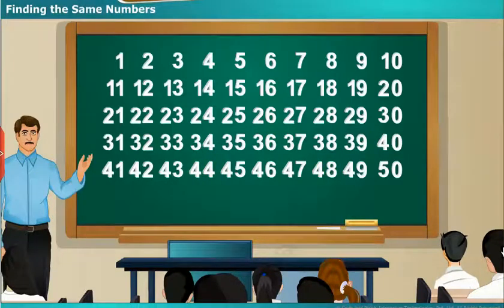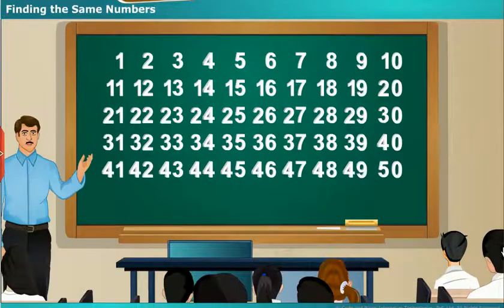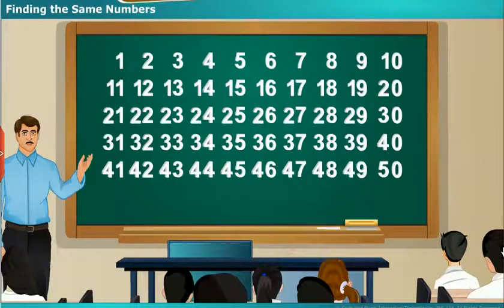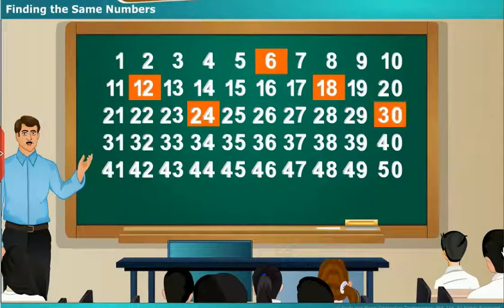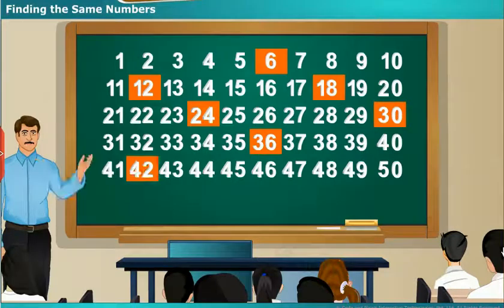Observe the numbers which are in common given by Haritha and Vihari. The numbers are 6, 12, 18, 24, 30, 36, 42, and 48.